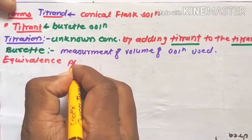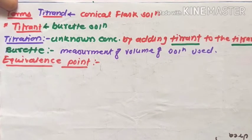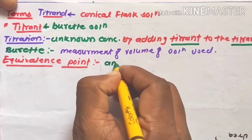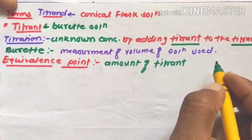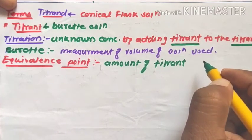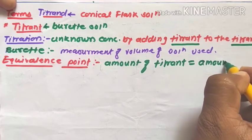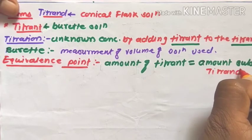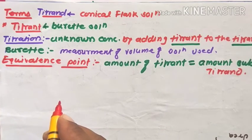Equivalence point: it is the point in the titration at which the amount of titrant — that is, the burette solution — is chemically equivalent to the amount of the substance being titrated. The equivalence point is the theoretical completion of the chemical reaction.